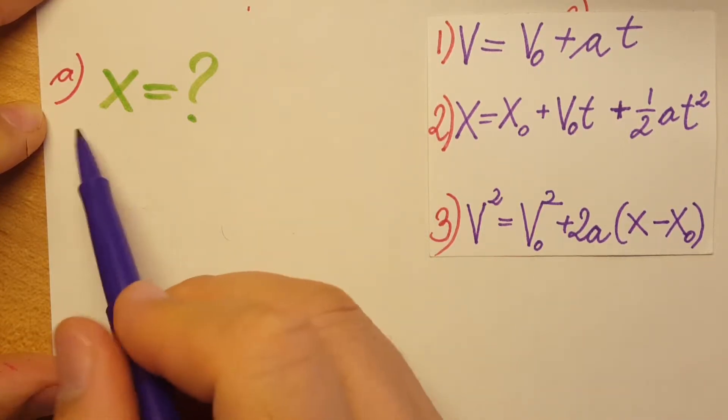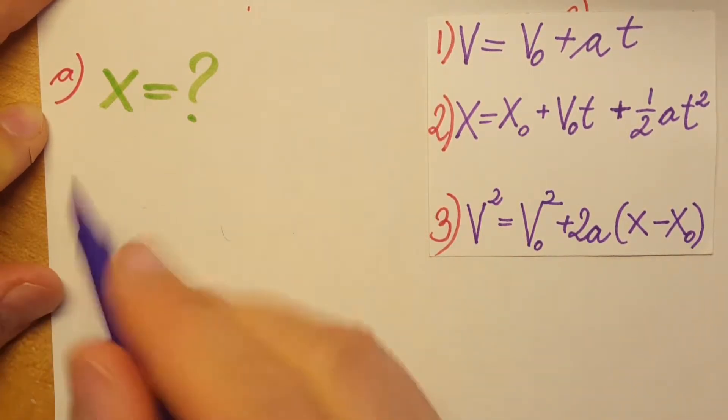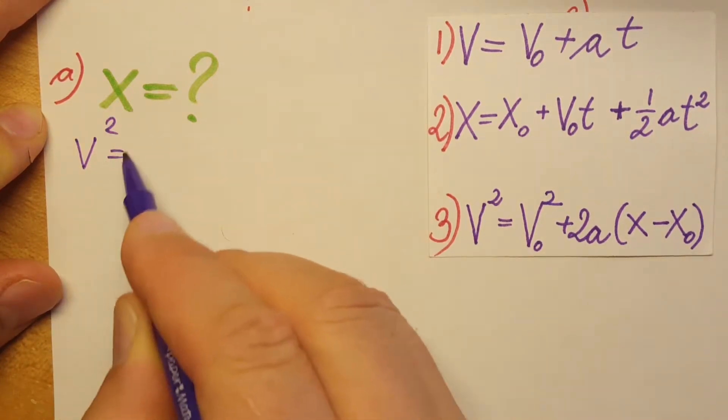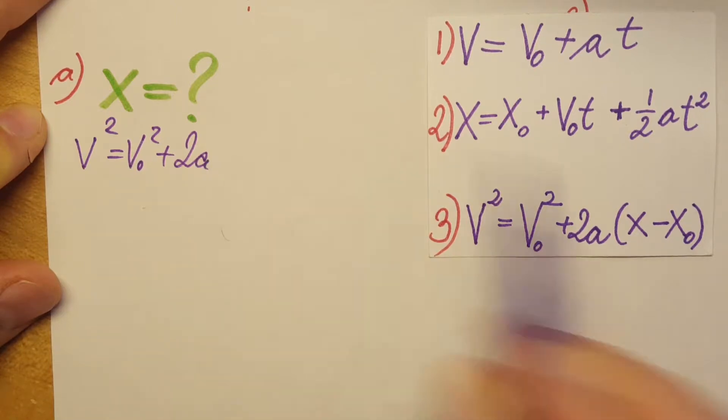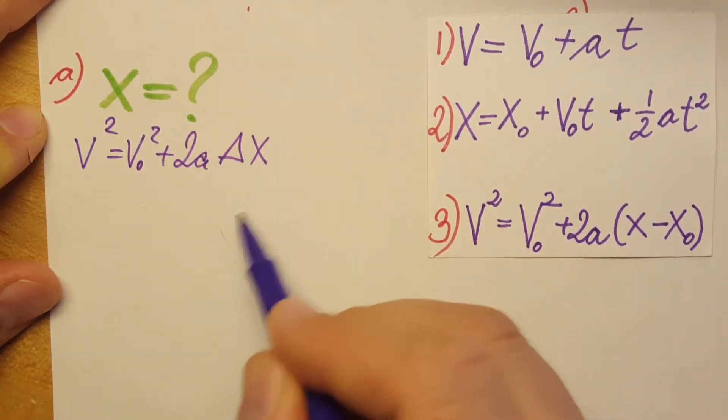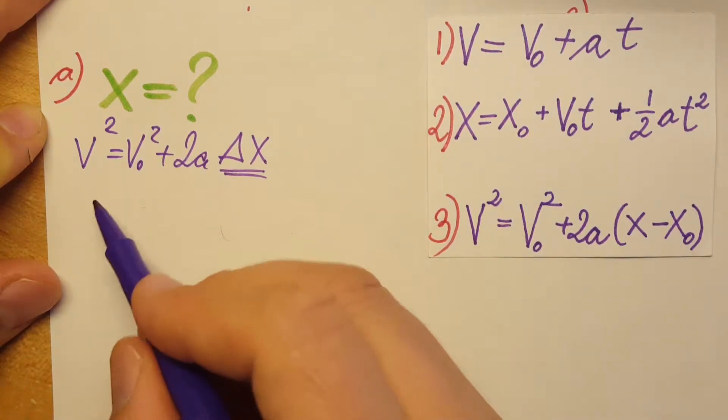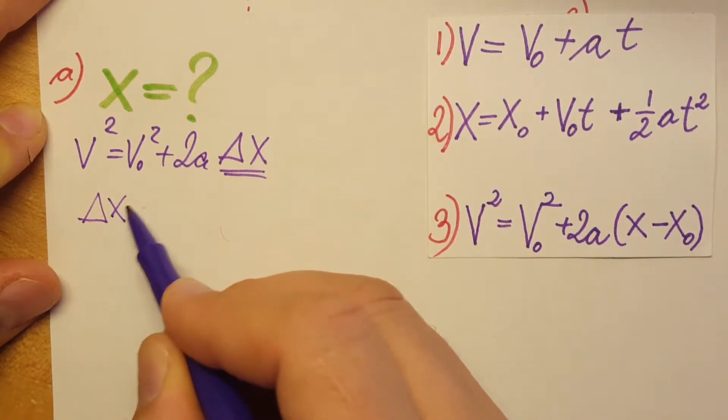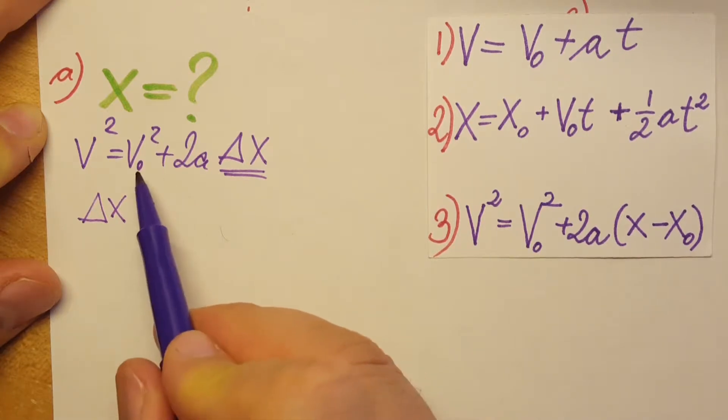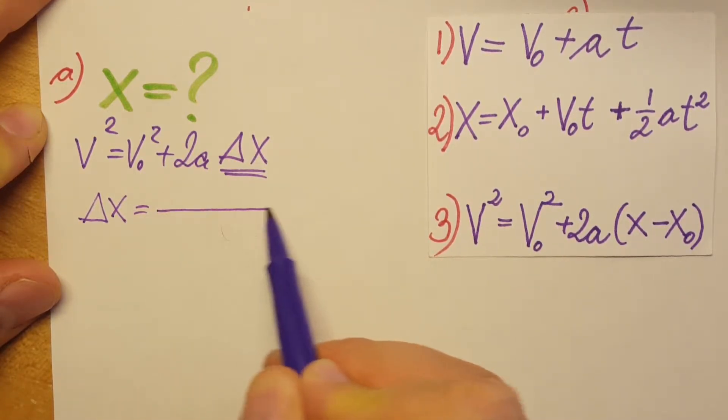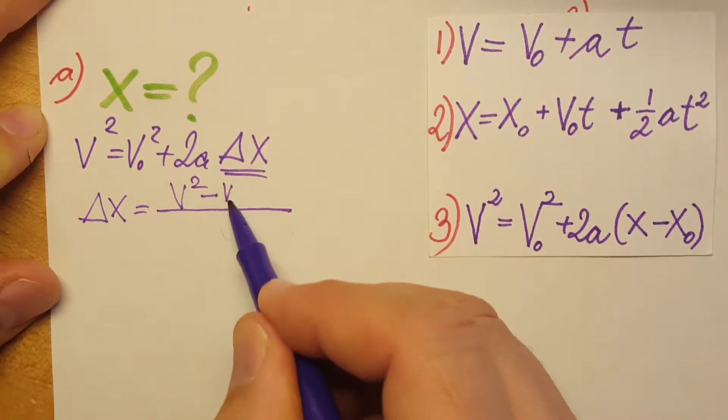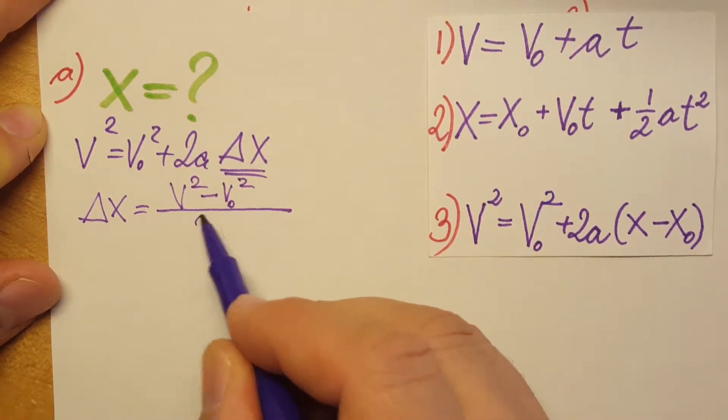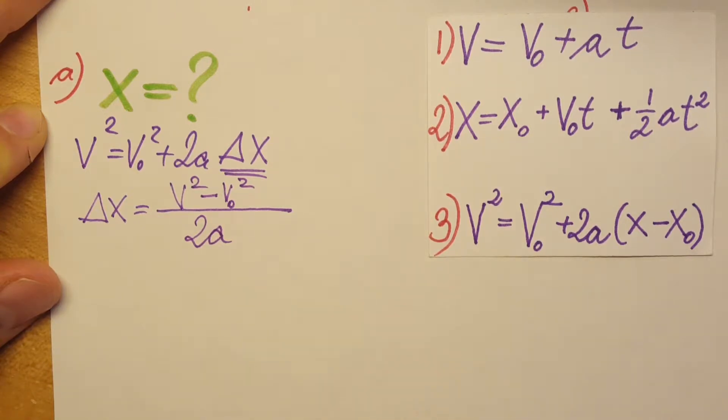Let's use our formula: v squared equals v₀ squared plus 2a delta x. This delta x is what we're after, so we'll solve for it. Moving terms around and dividing, we get delta x equals v squared minus v₀ squared divided by 2a.